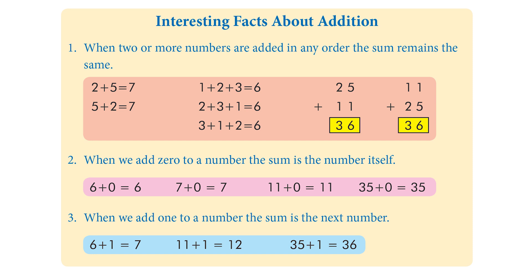When we add zero to a number, the sum is the number itself. 11 plus zero is 11, 8 plus zero is 8. Anything we add zero to, we get the same number back.